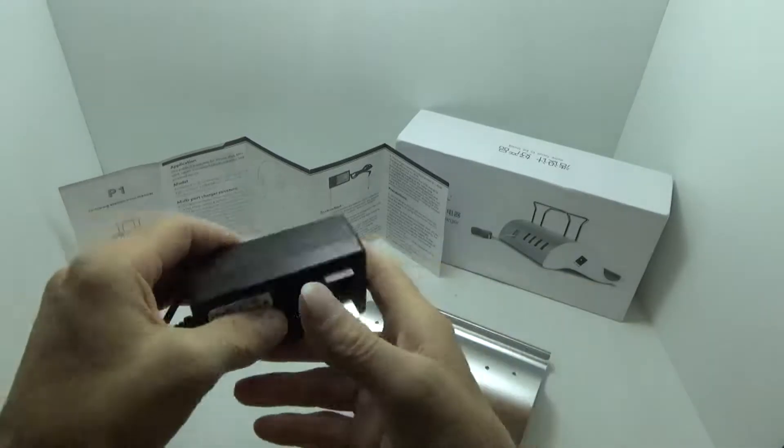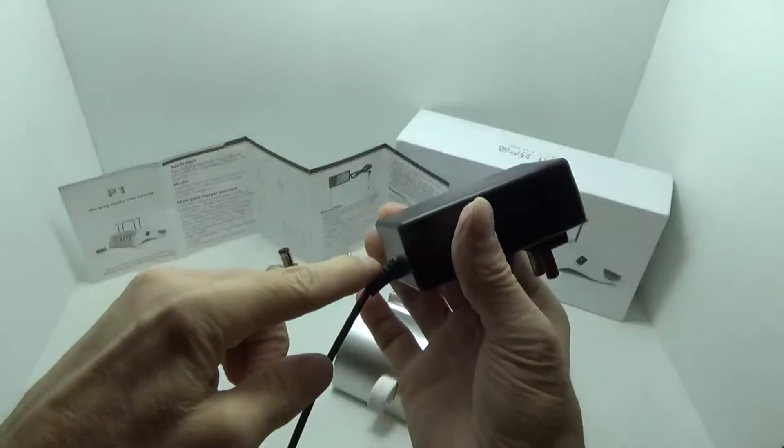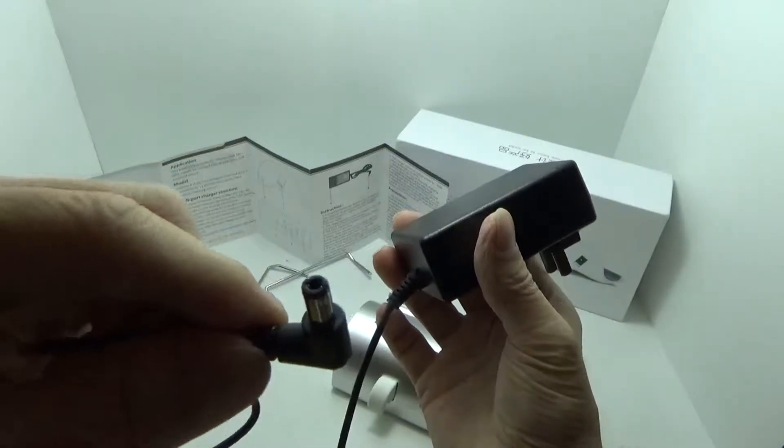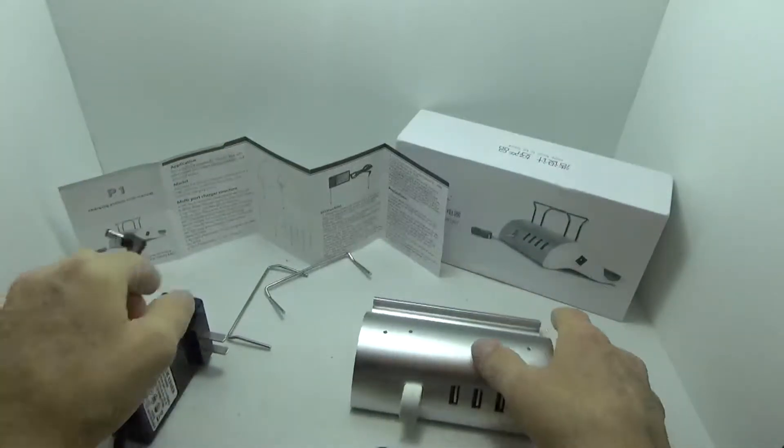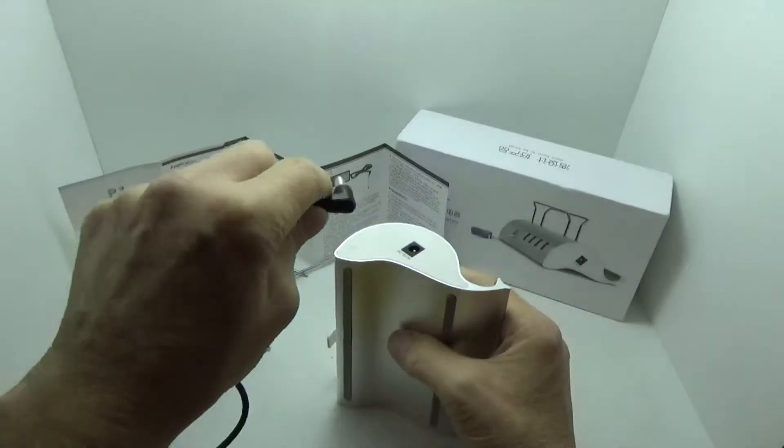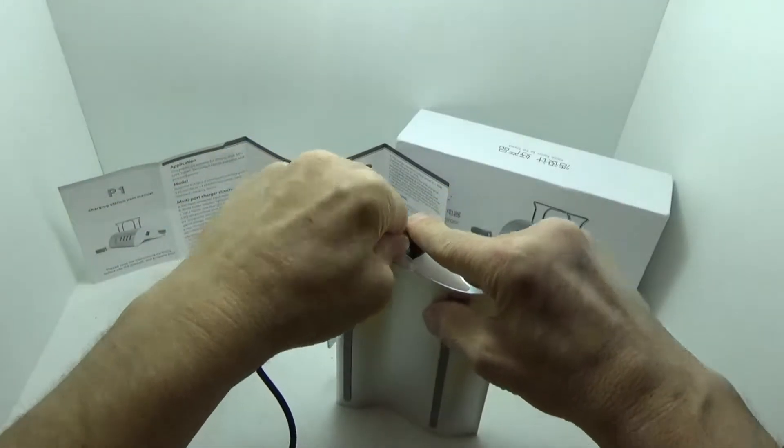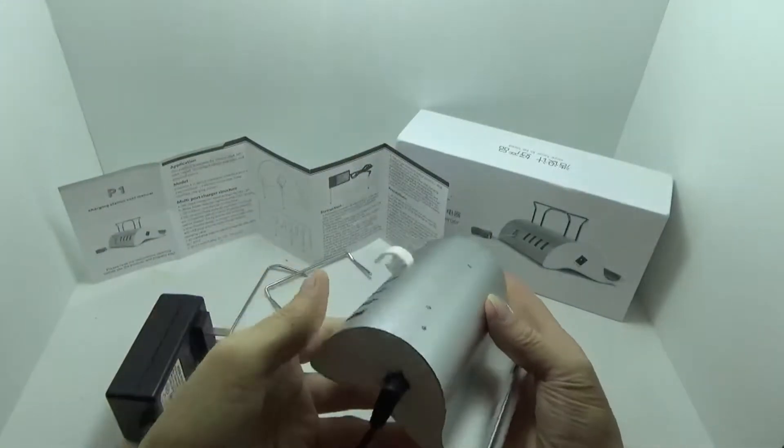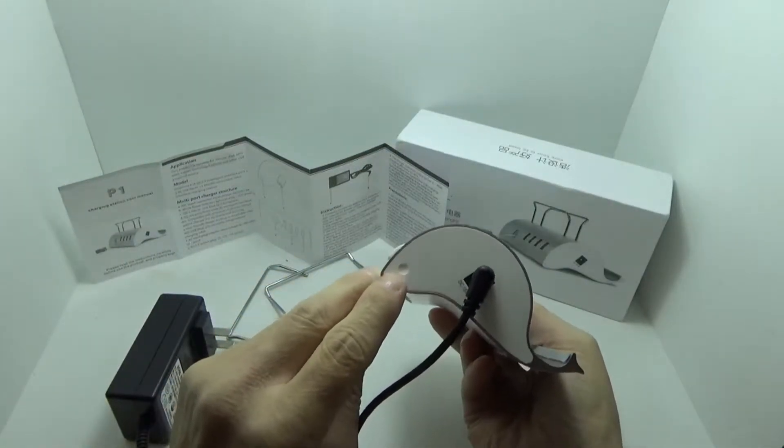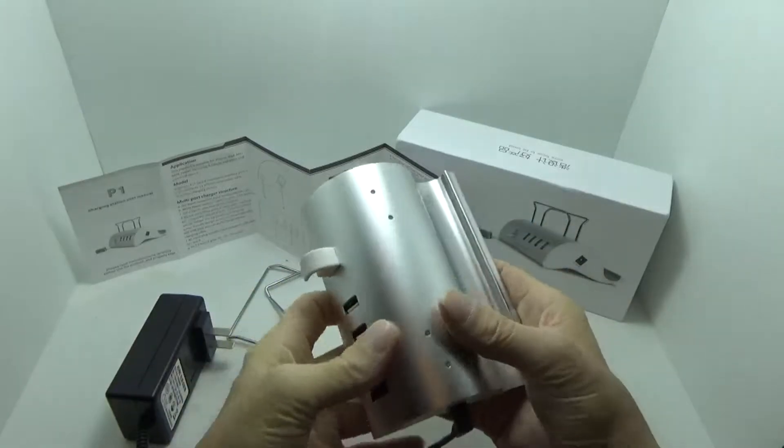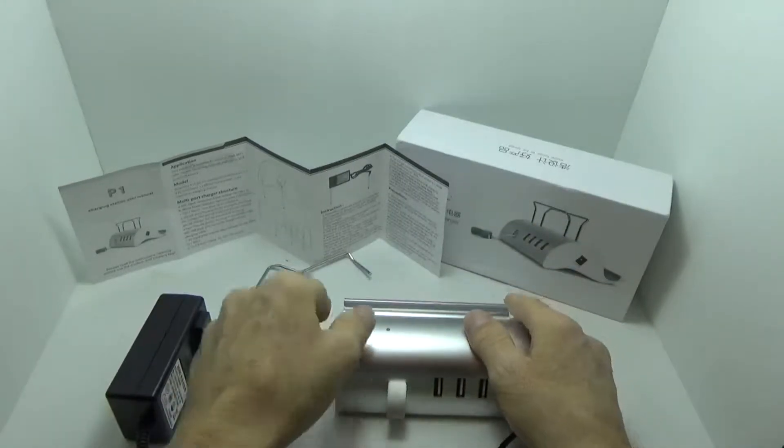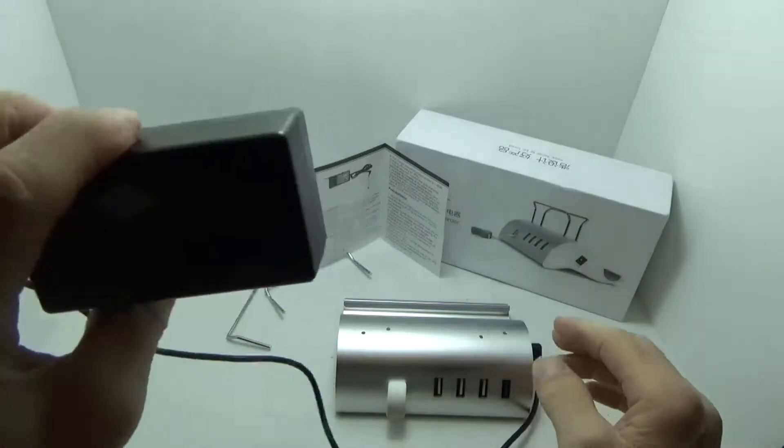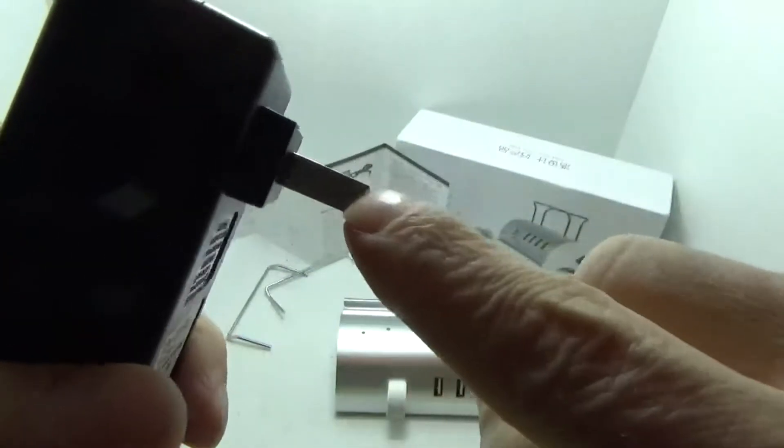The power cord included has about 45 inches from here to the barrel connector on the end. When it's connected, it's very solid—it's not going to fall out. We have a white indicator light here, and with 45 inches it gives you plenty of room to work with.